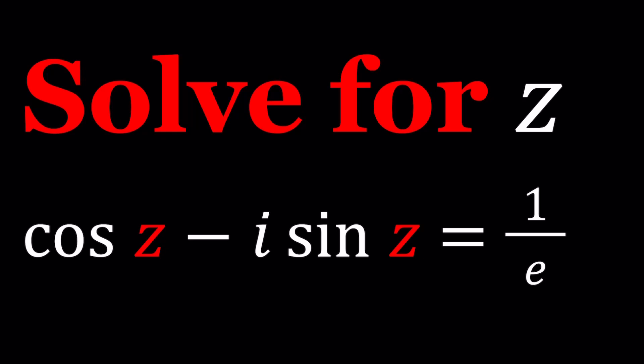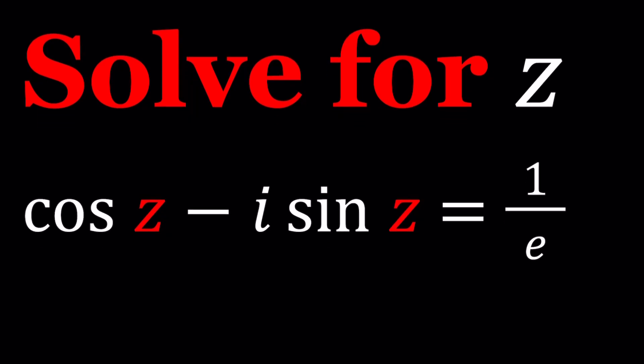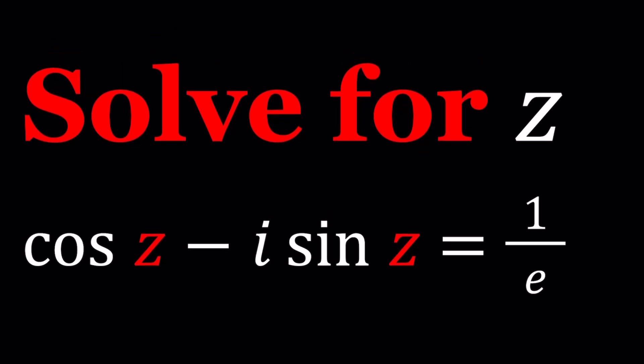We have cosine z minus i sine z equals 1 over e and we're going to be solving for z. Alright, so z is a complex number and we can go ahead and replace z with a plus bi, can't we? Which is the name of this channel. But is that going to help? That's going to be a good question. So let's see how we can solve this problem in at least one way, and if there's any other methods that I can come up with during the video or if you let me know, I'll be more than happy to take a look at it.